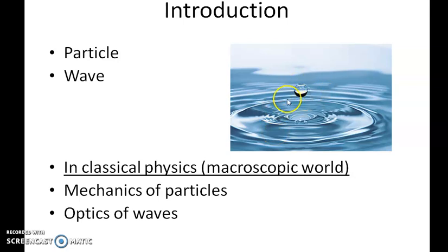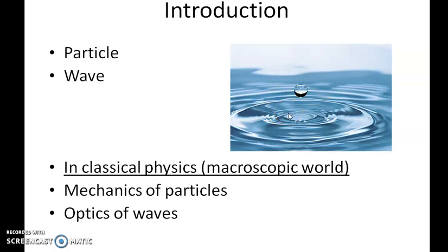The stone and the ripples have only some common properties, like the ability to transfer energy and momentum. The stone has got mass, velocity, etc., and the ripples will have a wavelength, frequency, etc. The common properties are the ability to transfer energy and momentum only.